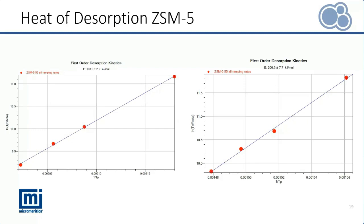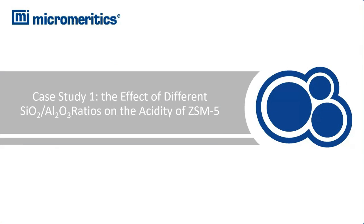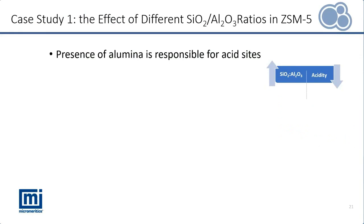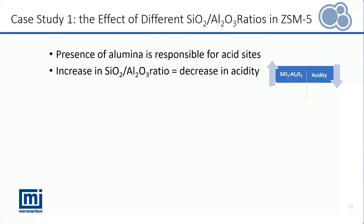Now we will go over the first case study, where we investigate the effect of different silica alumina ratios on the acidity of ZSM-5. As previously mentioned, the acidity of a zeolite depends on the presence of alumina, so an increase in silica alumina ratio will result in decreased acidity. ZSM-5 with different ratios were analyzed using ammonia TPD: 30 to 1, 55 to 1, 80 to 1, and 280 to 1 ratios were tested.